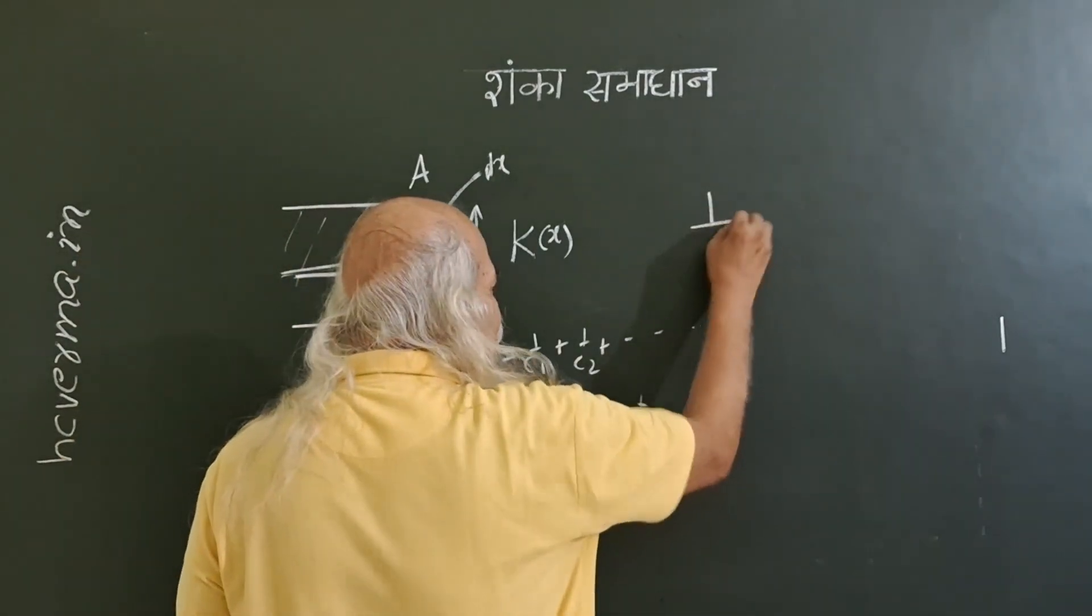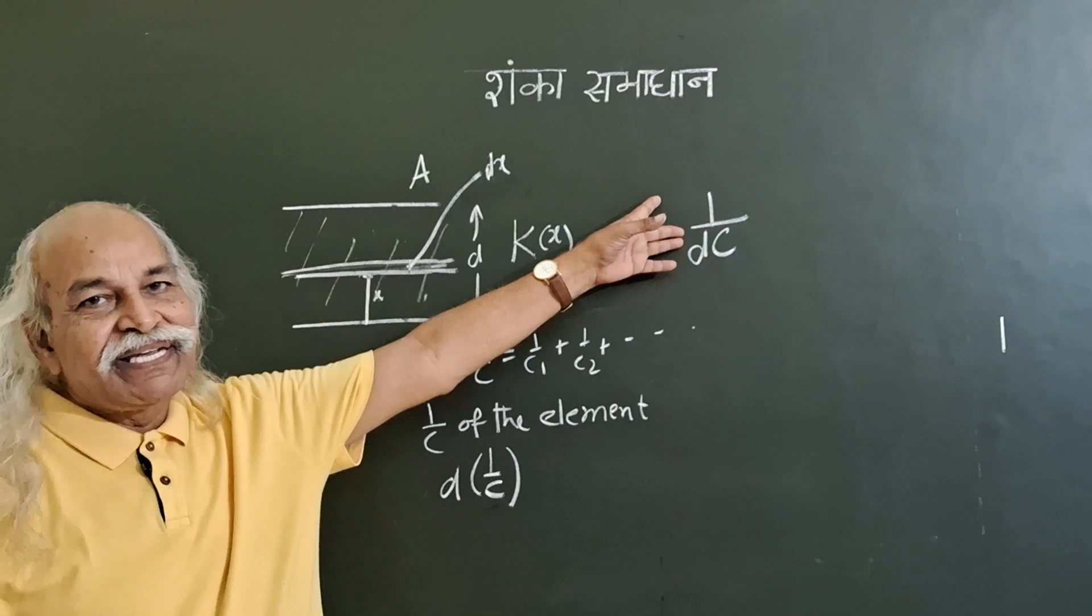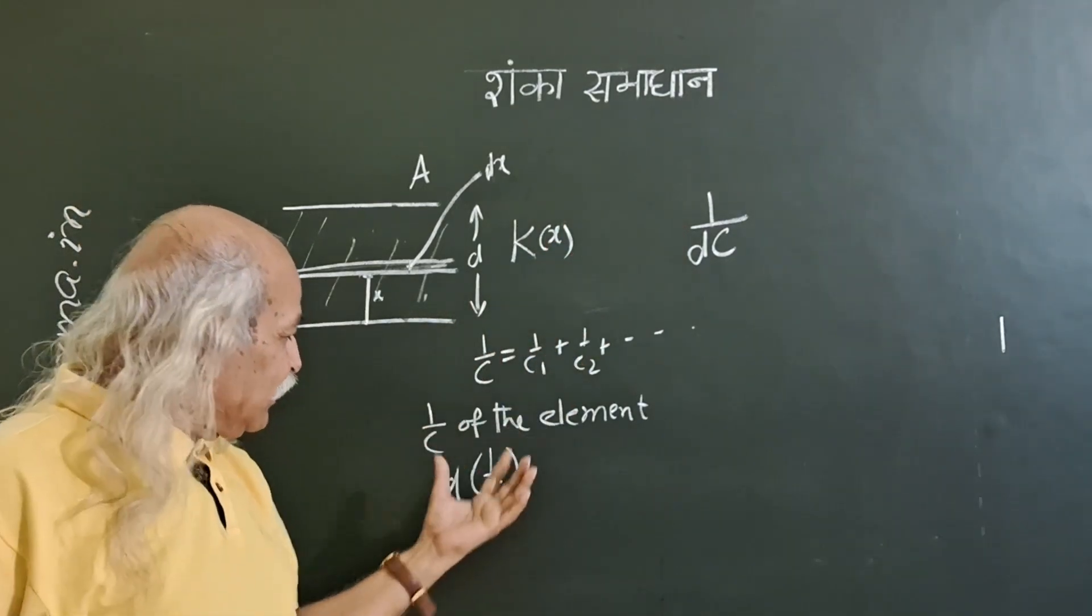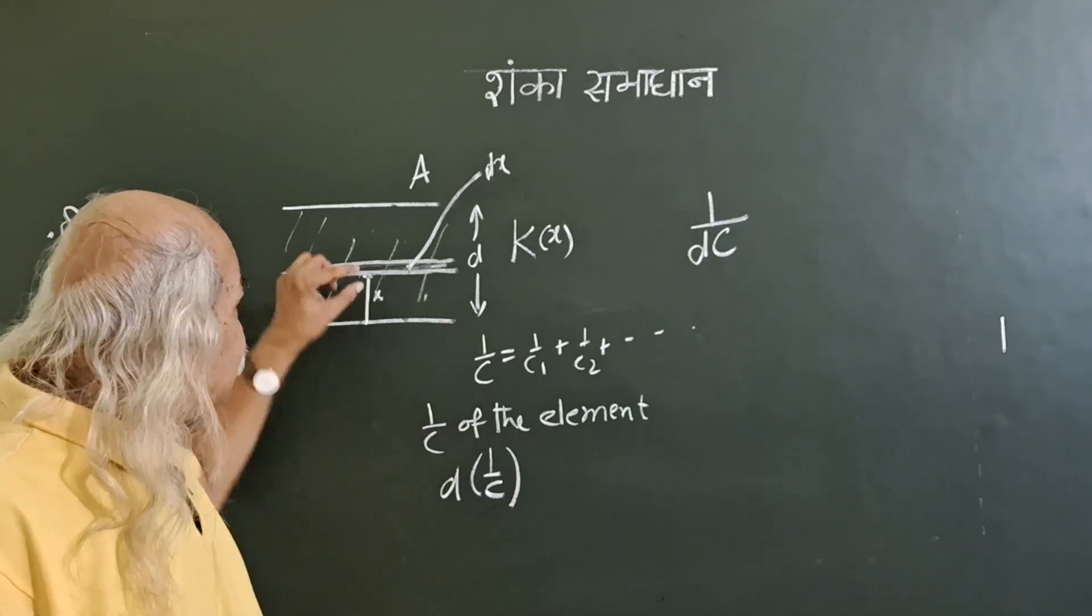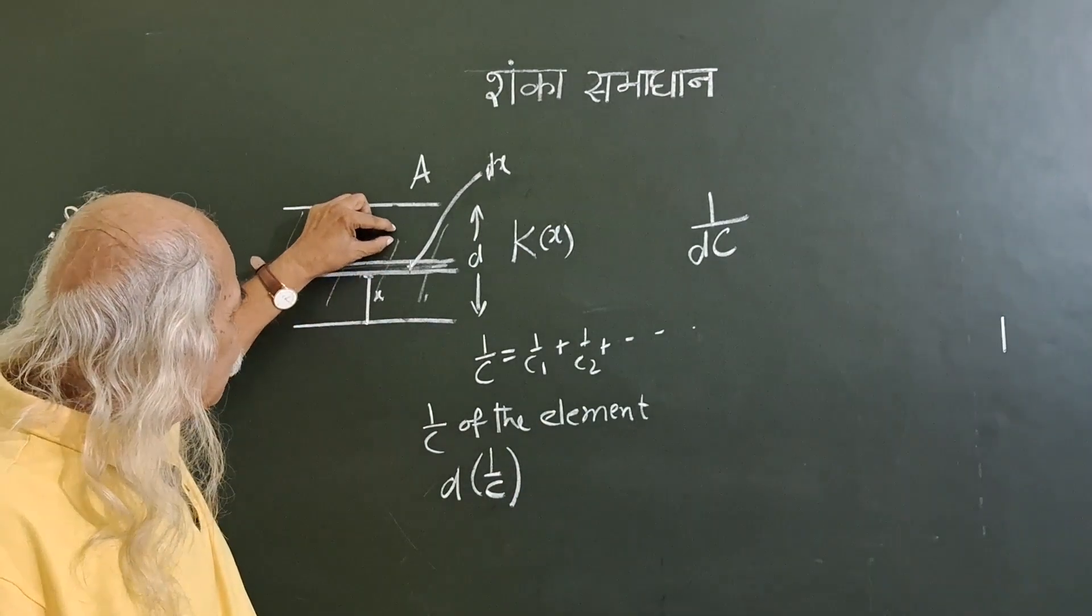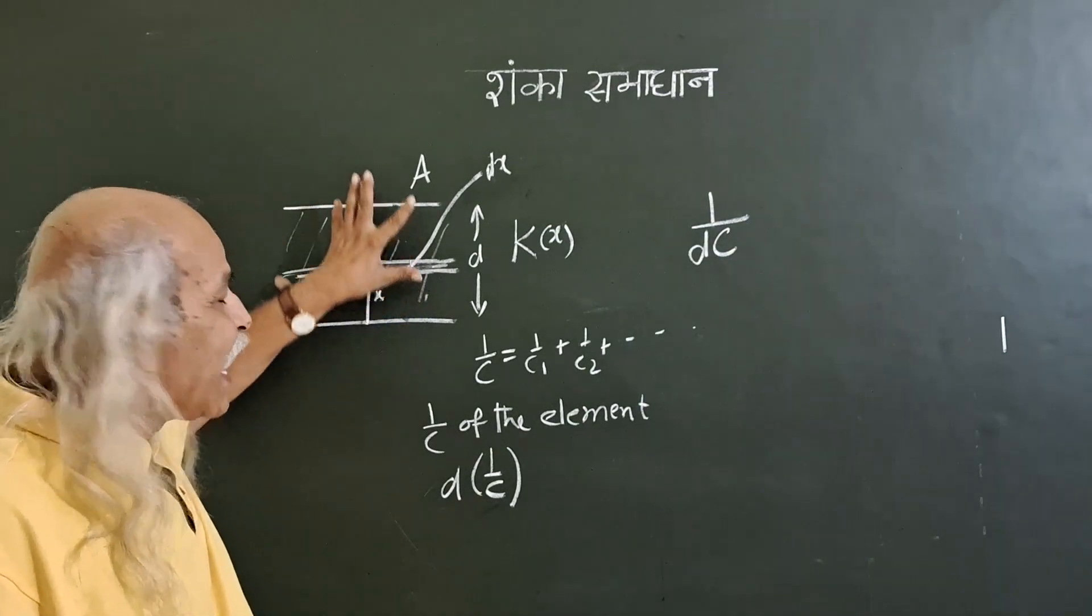He says that in most of the solutions, they write it this way. This of course does not make any sense in mathematics. But it makes sense because it is 1 by c of this and that is 1 by c of this and 1 by c of this and 1 by all are to be added.